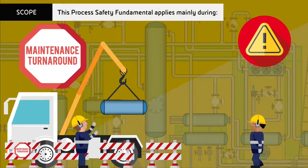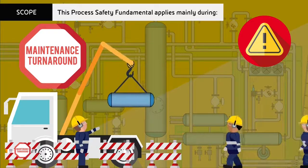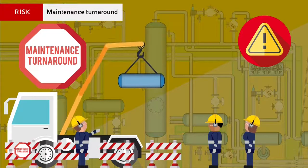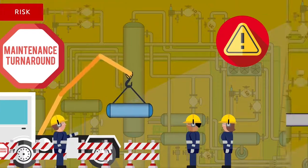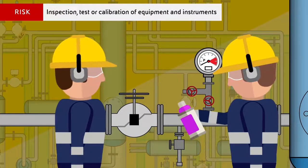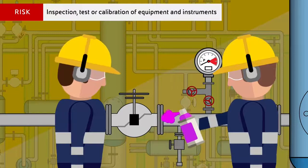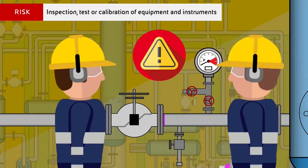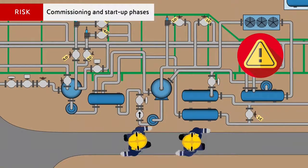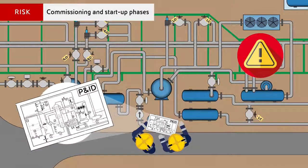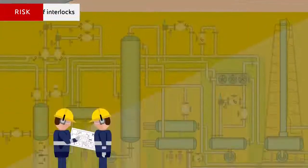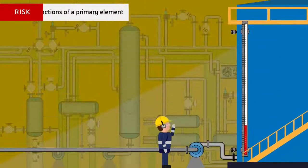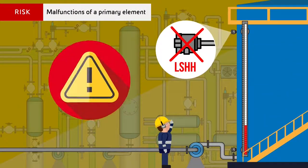This process safety fundamental applies mainly during: maintenance turnaround; inspection, test or calibration of equipment and instruments; commissioning and start-up phases; testing of interlocks; and malfunctions of a primary element.